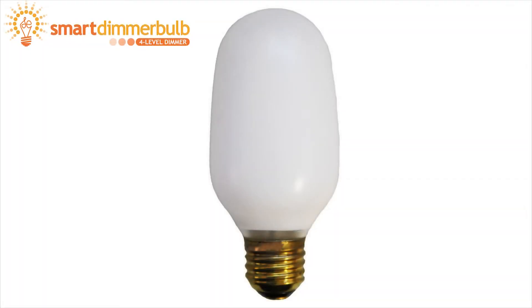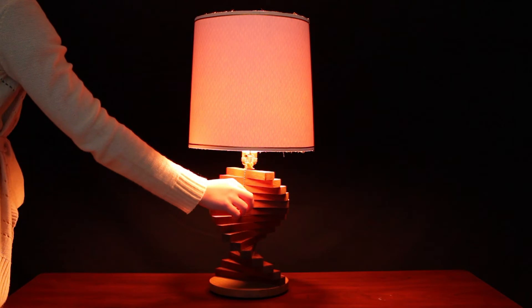The Smart Bulb 4-Level Dimmer by Smart Electric acts like a normal 100-watt light bulb until it is activated by a switch where it steps down four levels to a nightlight.